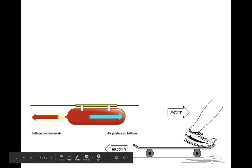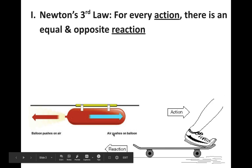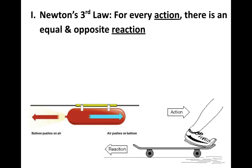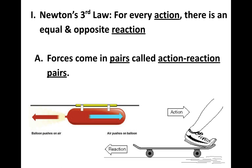Same thing if you're riding a skateboard or even just walking. If you're on a skateboard, you push backwards, and from you pushing backwards on the ground, you move yourself forward. Or if you're jumping off a skateboard — you would push the skateboard backwards and the skateboard would push you forward. Newton's Third Law is: for every action, there is an equal and opposite reaction. Basically, anytime there is a force, there is always a second force. Forces always come in pairs, and we call these action and reaction pairs.